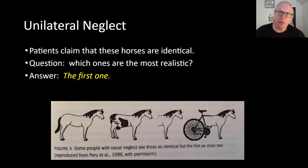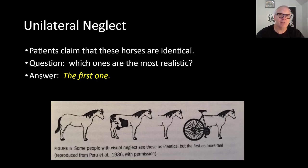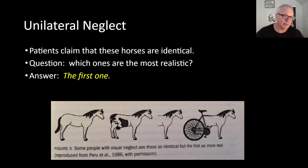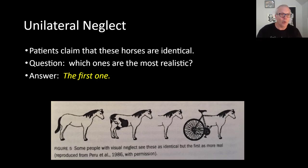Here's another case: with unilateral neglect patients shown images of a regular horse, a half-cow/half-horse, a half-horse, and a half-bicycle/horse — these patients claim all these horses are identical. But when asked which one is the most realistic horse or which they'd prefer to ride, they say they like the first one best. They can't tell you why, but they do prefer it. So they can recognize it's a horse and say they're all identical, but they can't get to this important detail or feature on the altered side.